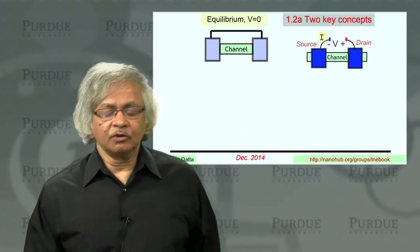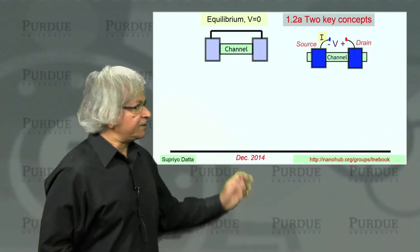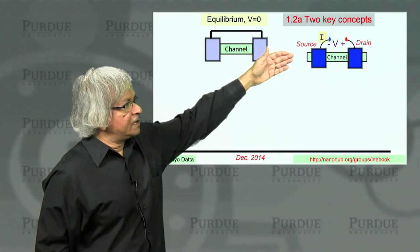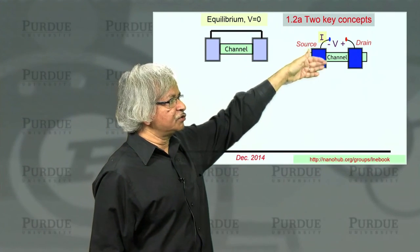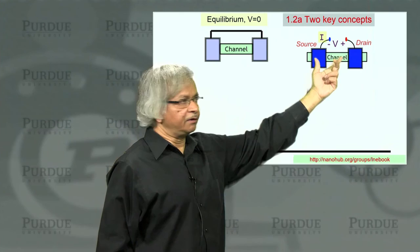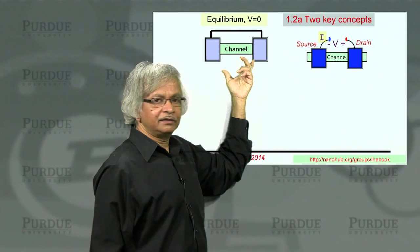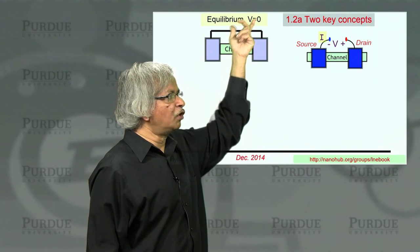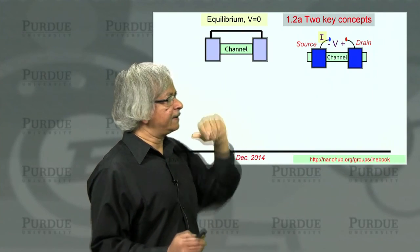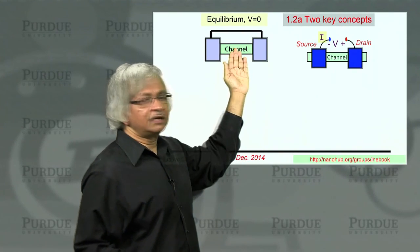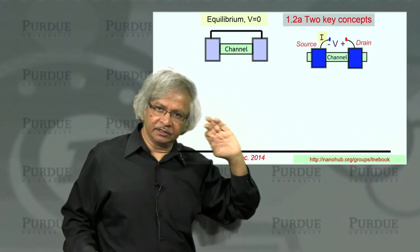These two concepts then, let me try to explain. We are interested in the current that flows in a device when you apply a voltage across it. But let's first start with the equilibrium case where there is no voltage applied. Now the first question is what are the energy levels available in the channel?